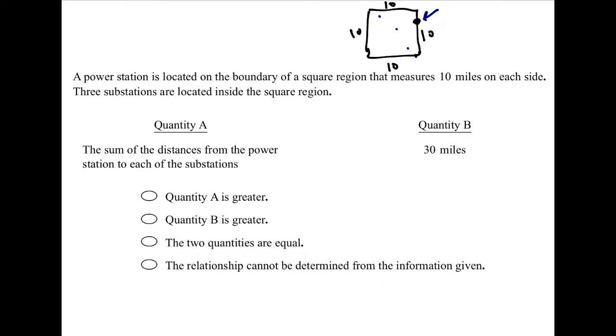So quantity A says the sum of the distances from the power station to the substations. Well, that would be this distance plus this distance plus this distance. But I'm aware that I chose those points at random. I chose the power station location at random and I chose the three substations locations at random. And obviously I don't know what the lengths of these, of any of these lines are.